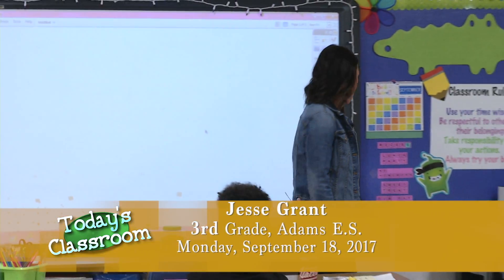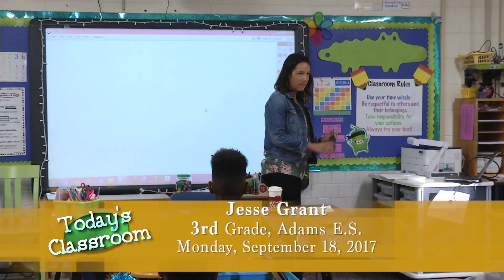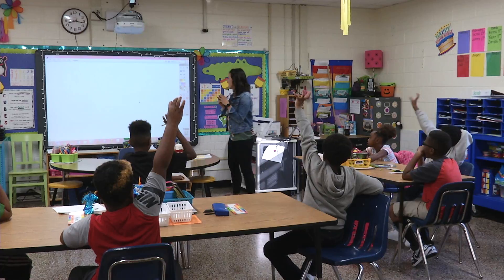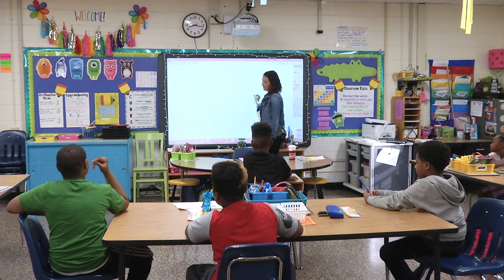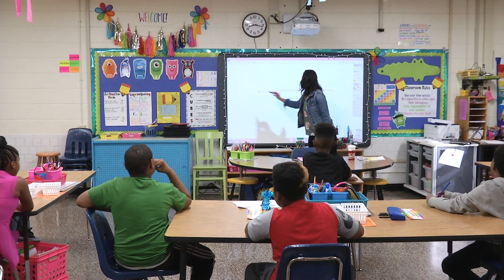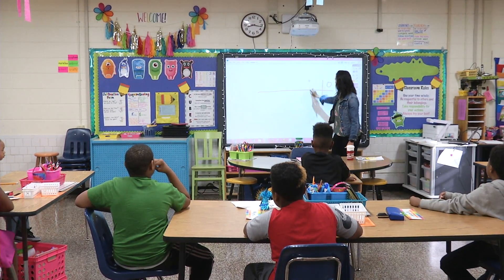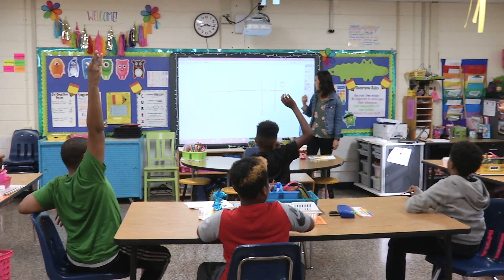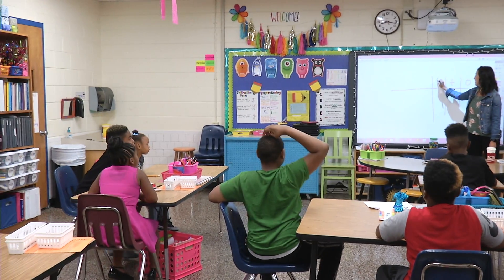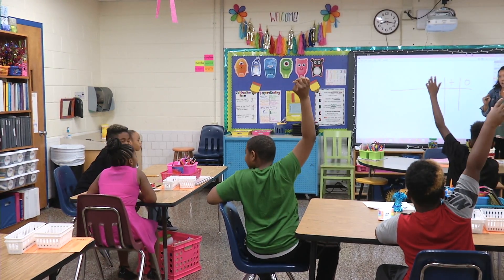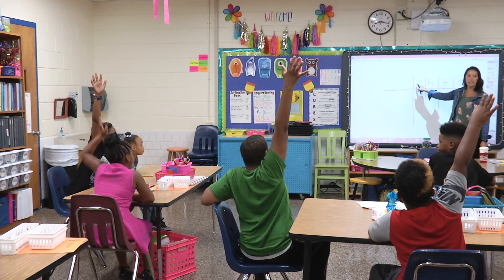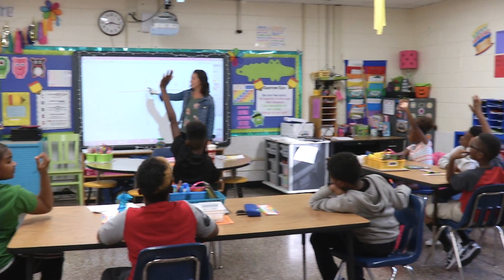Okay guys, so let's talk about our place value chart. When we fill in and make a place value chart, what's the smallest place value that we have, that we know of? Tierra? The ones place. What comes after the ones place? What's the next smallest? Tens place. If we keep going, Jada? There's something before the thousands. The hundreds. Then we have the — what comes next, Aaliyah? Thousands.